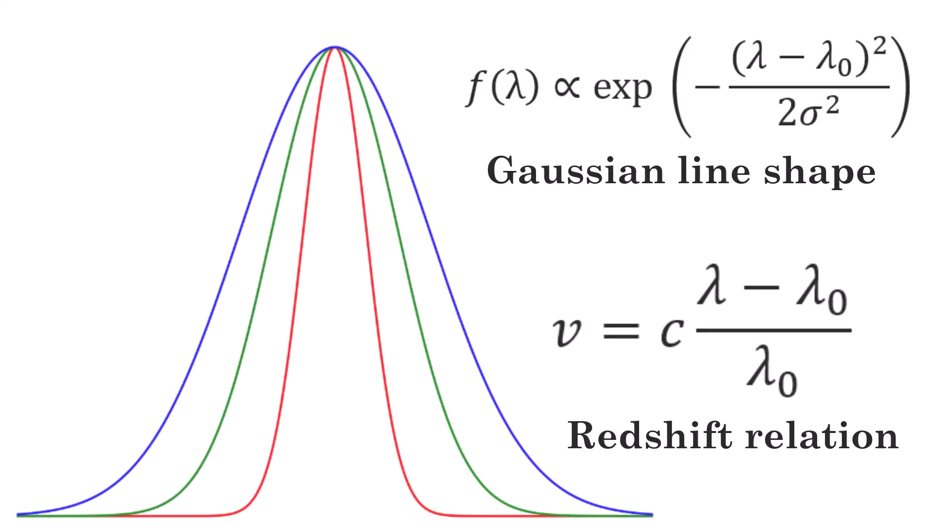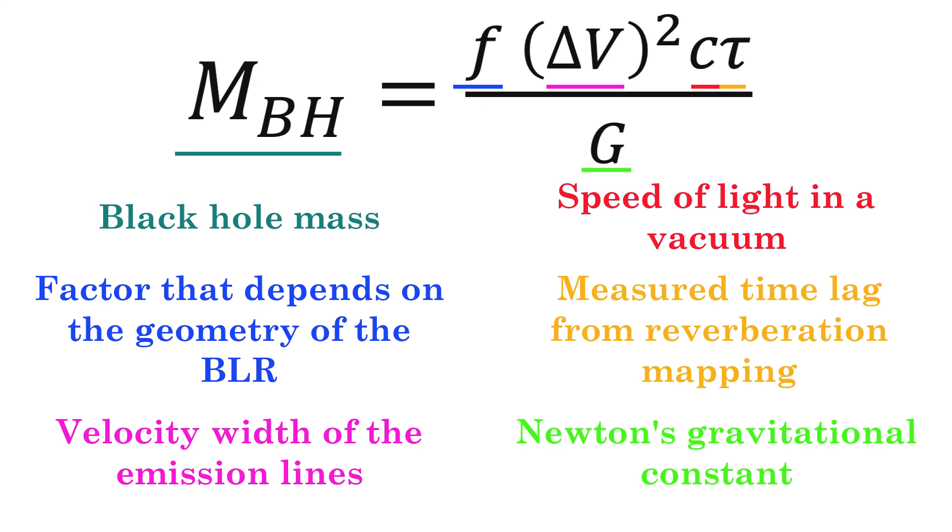From then, we can look at the width of the emission lines to infer the velocity of the gas in the clouds, and use the virial theorem to estimate the mass of the supermassive black hole, because we know that its gravitational force is the dominant force governing the motion and position of the gas clouds in the centres of galaxies.